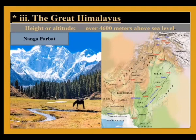The highest mountains in the north form part of the Great Himalayas, which are over 4600 meters high. These mountains are covered with glaciers and snowy peaks. They are located in Kohistan district.